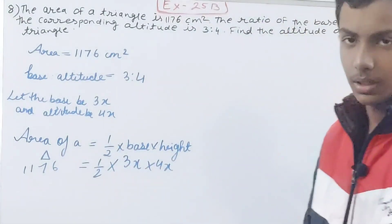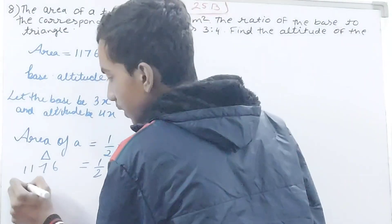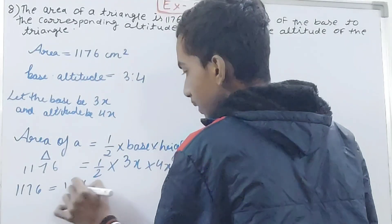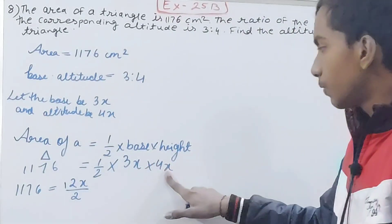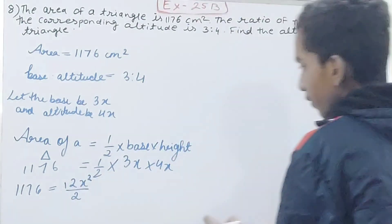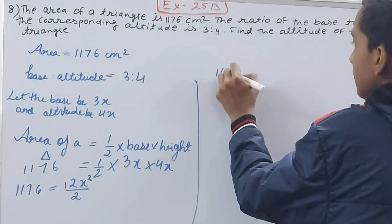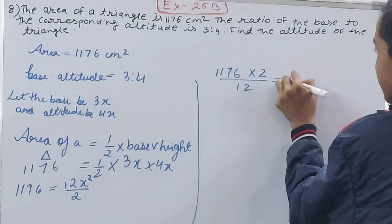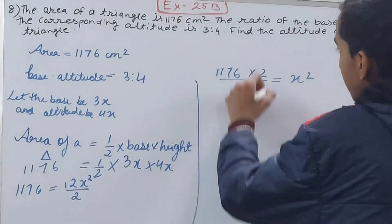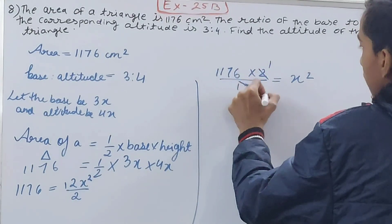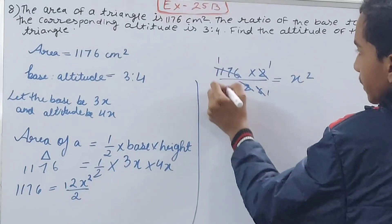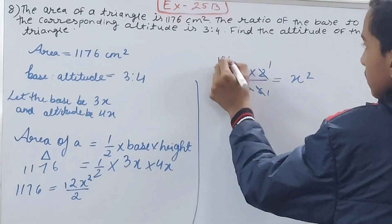Now see, you will have 1176 is equal to 3 into 4, that is 12x² divided by 2. 3 into 4 is 12, and x into x is x squared. Don't make that mistake of putting just x here. So you have 1176 into 2 divided by 12 is equal to x squared. I have transposed this 12 by 2 here, so I've got 2 by 12. Now cancel: 6 into 196 is equal to x squared.